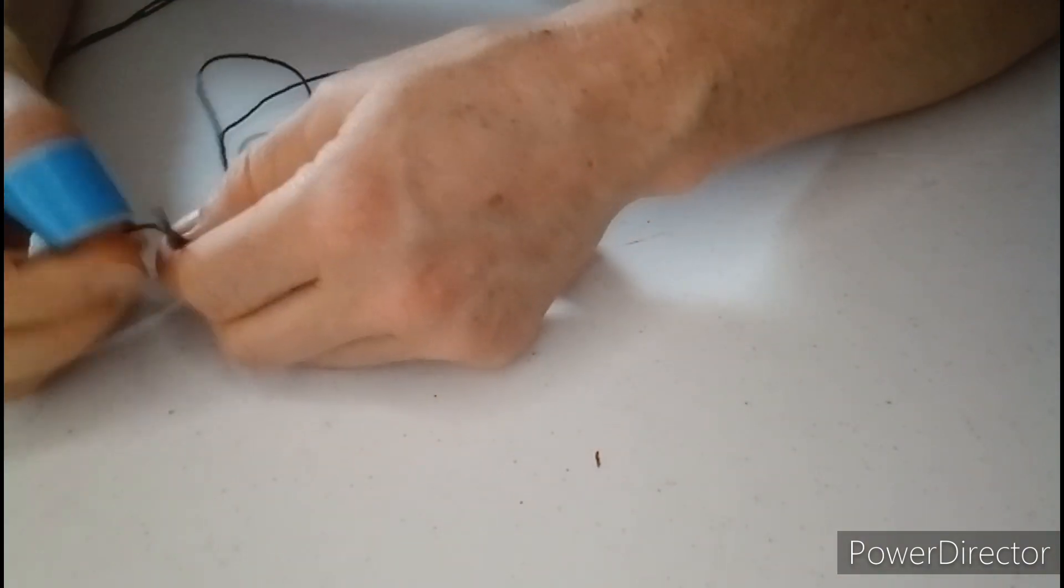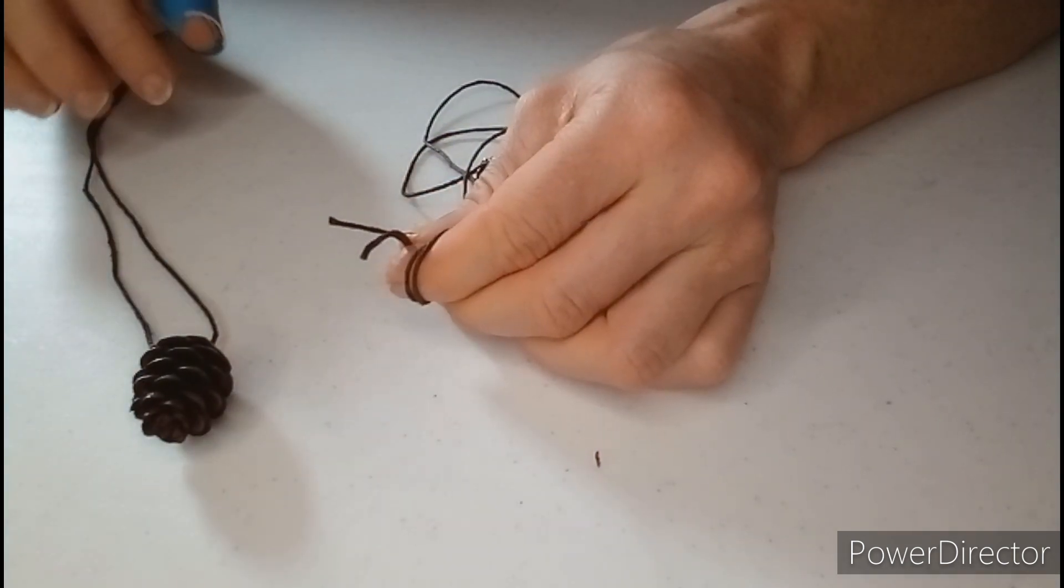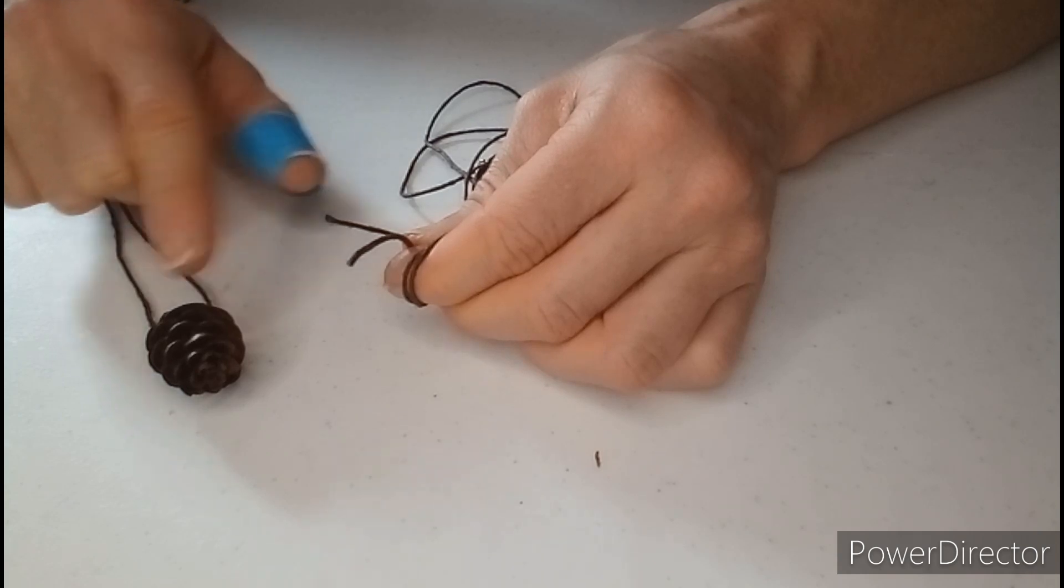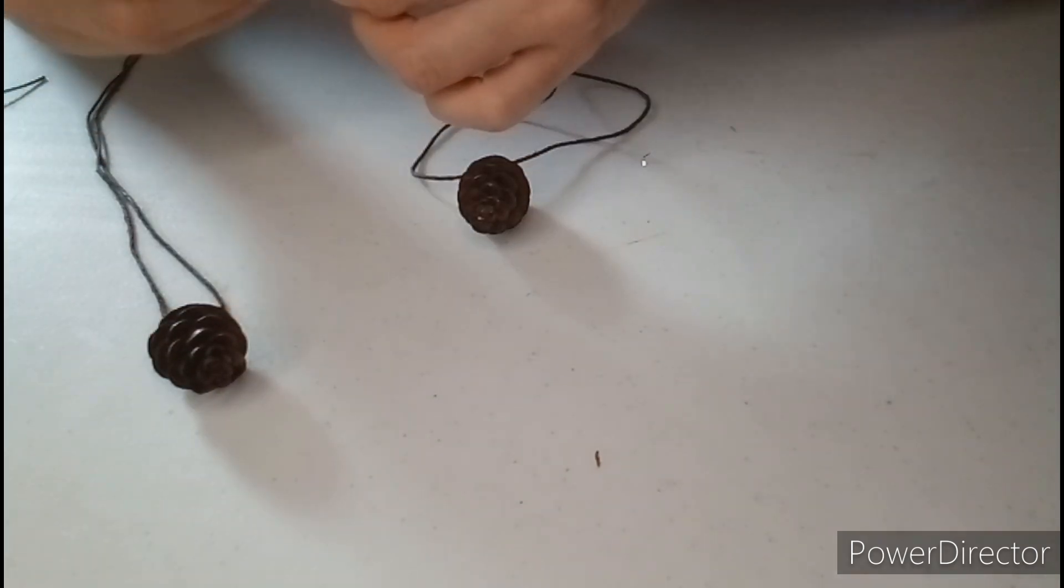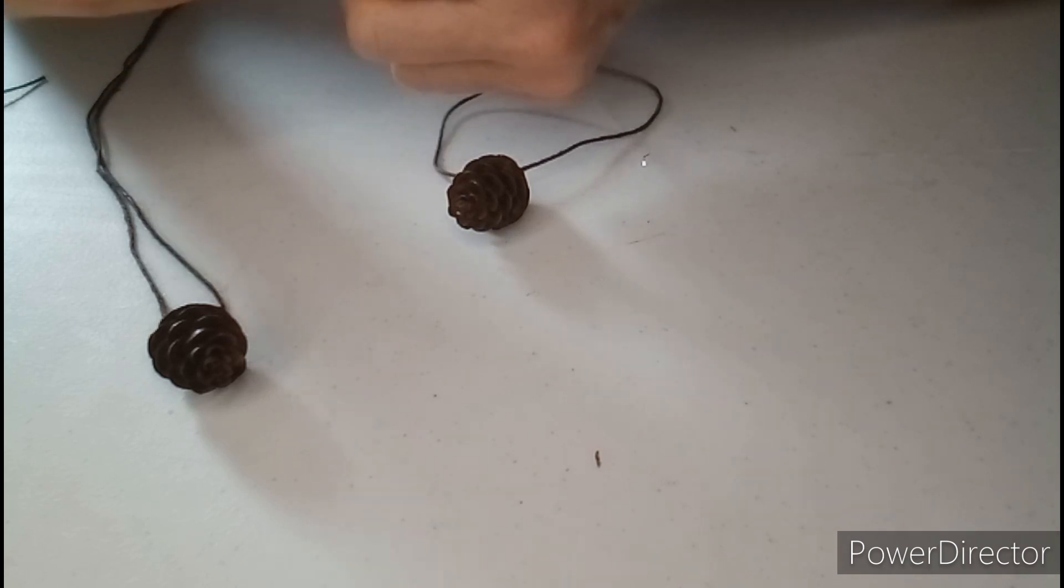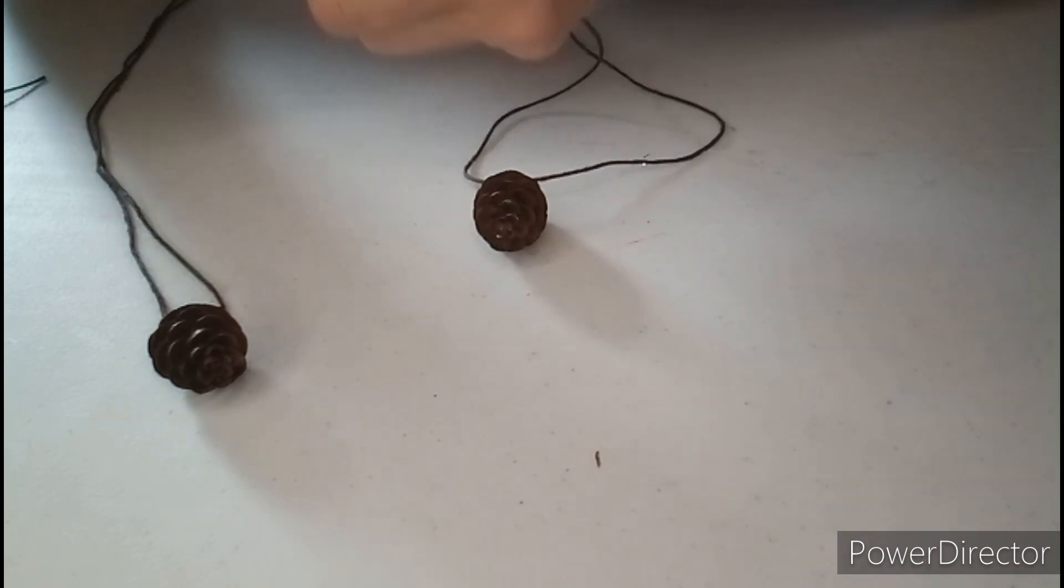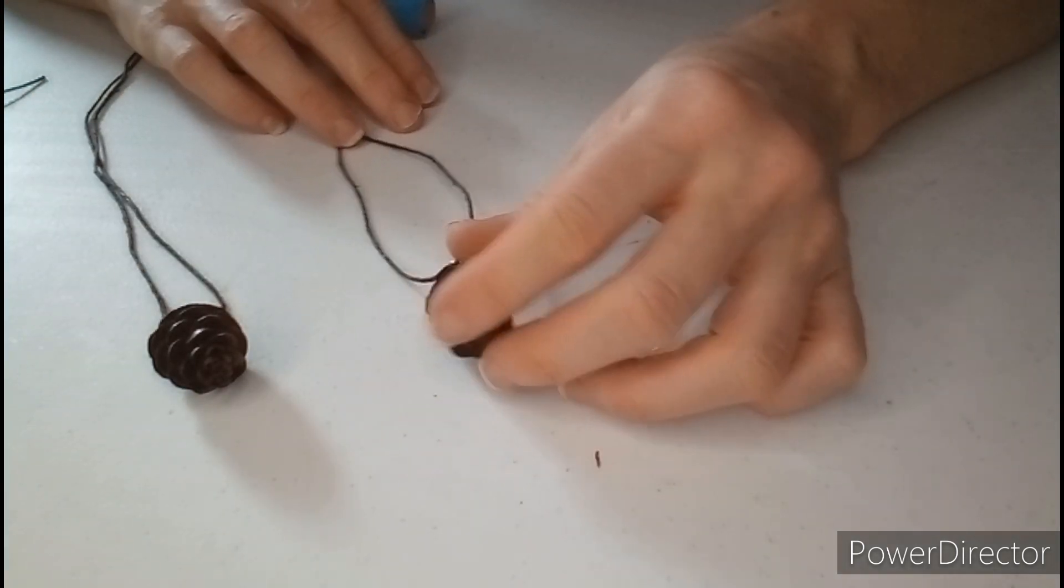For this necklace, this pine cone necklace, I painted with clear nail polish on the outside so it has a shiny look to it. So that's an option if you want, or you could use maybe a glitter, like a clear glitter polish. That would be nice too.